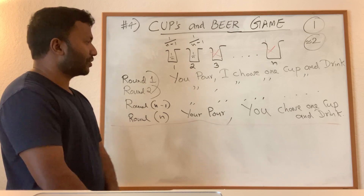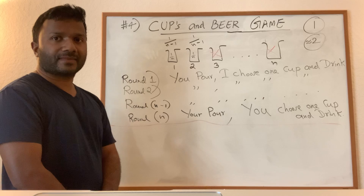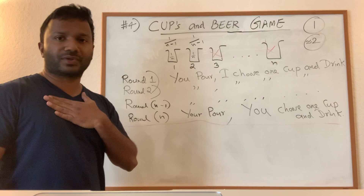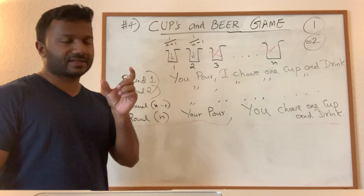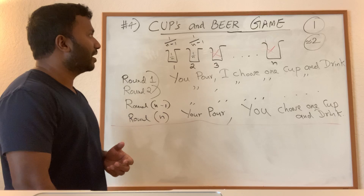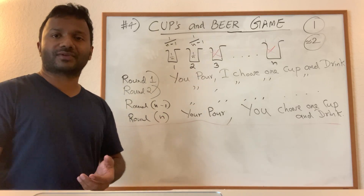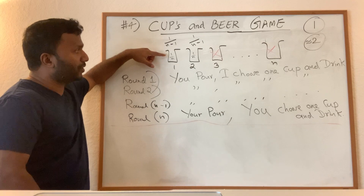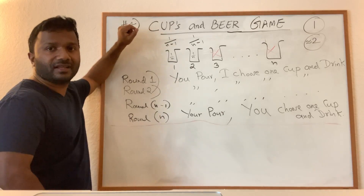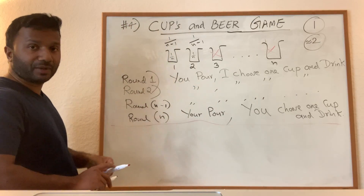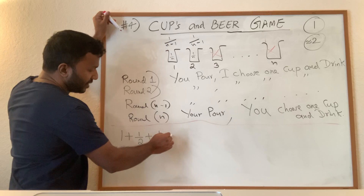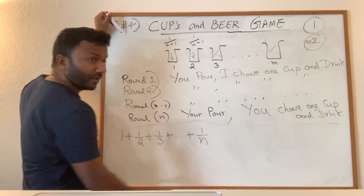What is the final outcome of this strategy? I get to drink only N minus one times, so I empty N minus one buckets. There is one last cup that remains non-empty, and you get to drink that. Because of round one you have 1/N in it, round two adds 1/(N−1), then 1/(N−2), and so on, until the last round adds 1. So the total amount of beer you get is 1 + 1/2 + 1/3 + ... + 1/N.